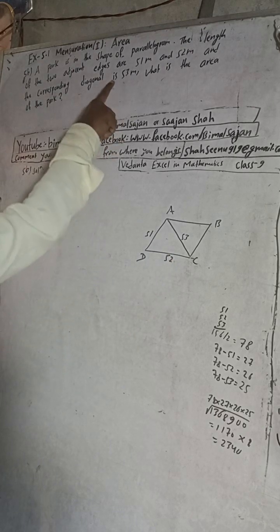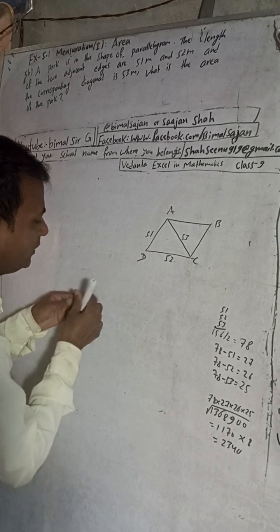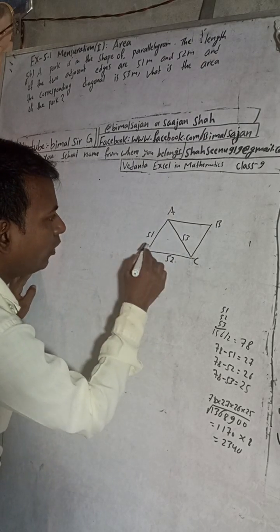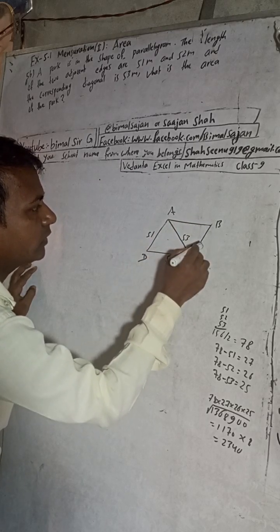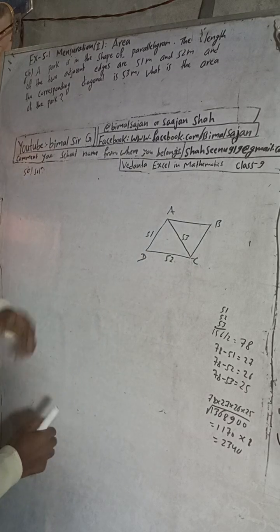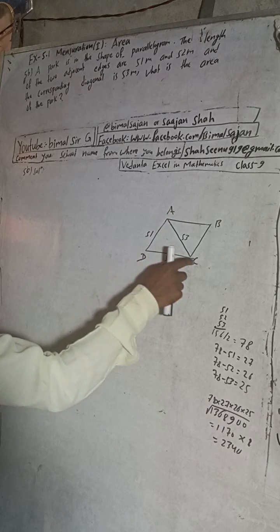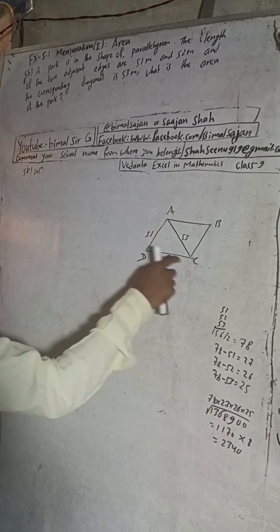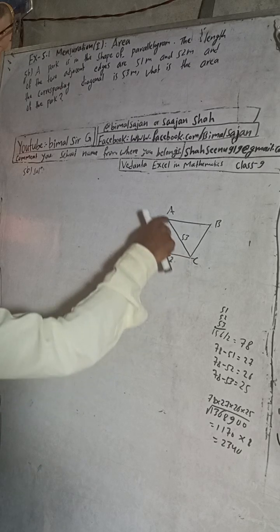Here given the adjacent edges, adjacent edges means we have to take continuous sides. Suppose if I take this, then we have to take this or this. This is called adjacent. And the corresponding diagonal means, suppose we have taken this and this adjacent edges or sides, then corresponding to this adjacent side, this is the diagonal.